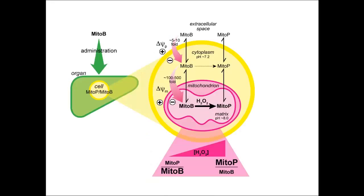One type of probe we have used is called MitoB. This is a mitochondria-targeted probe designed to react with hydrogen peroxide. You can administer it to an experimental animal — such as a Drosophila fruit fly or a mouse — by injection. It gets sucked into cells by the plasma membrane potential, then further accumulated by mitochondria via the mitochondrial membrane potential. This huge accumulation means MitoB is effectively only present in mitochondria in the body.